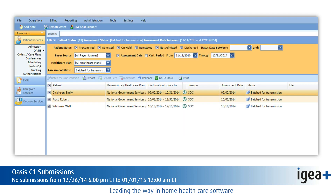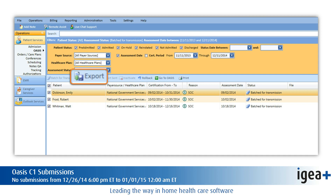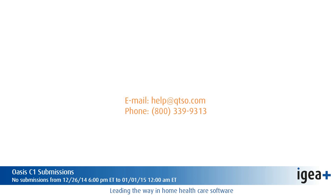If for any reason you exported OASIS-C on or before December 26 but didn't get a chance to submit them, make sure to roll back the OASIS and export them again. IGEA will make sure they are exported to the right format. Should you experience any issues, please email help@qtso.com or call 1-800-339-9313.